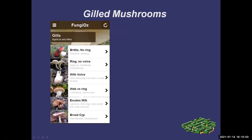We can start breaking gilled mushrooms down into subcategories. There's a family — Russula and Lactarius — that are brittle. When you pick them, the stems will snap like a piece of chalk, or if you were to throw them against a tree, they would just explode into a million pieces.